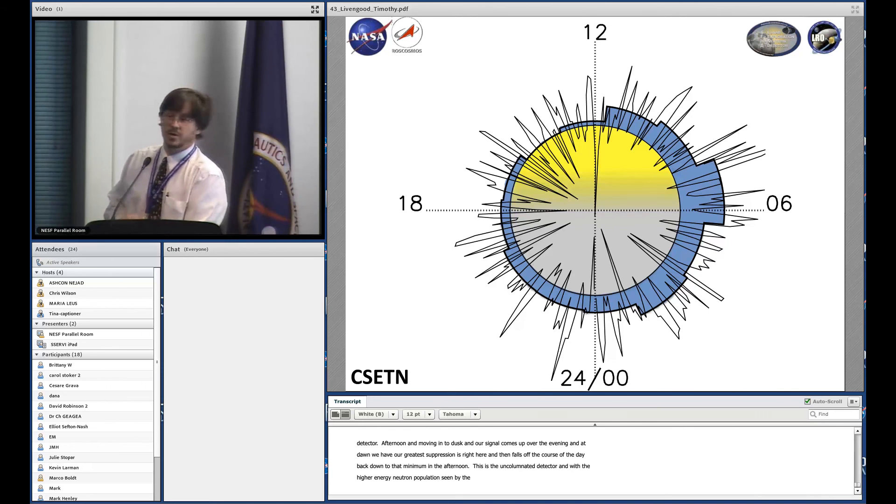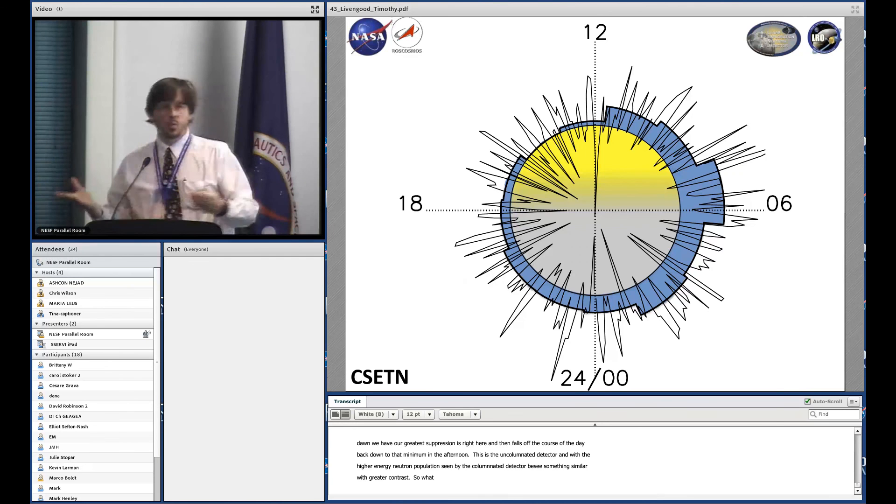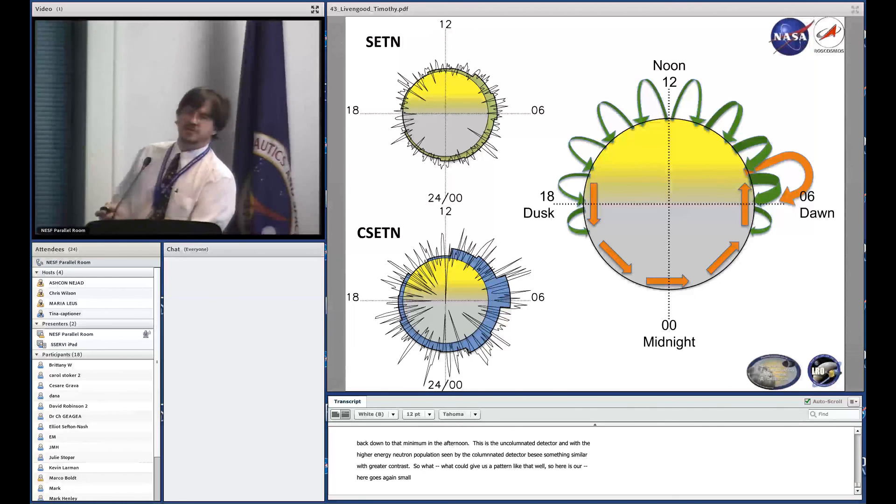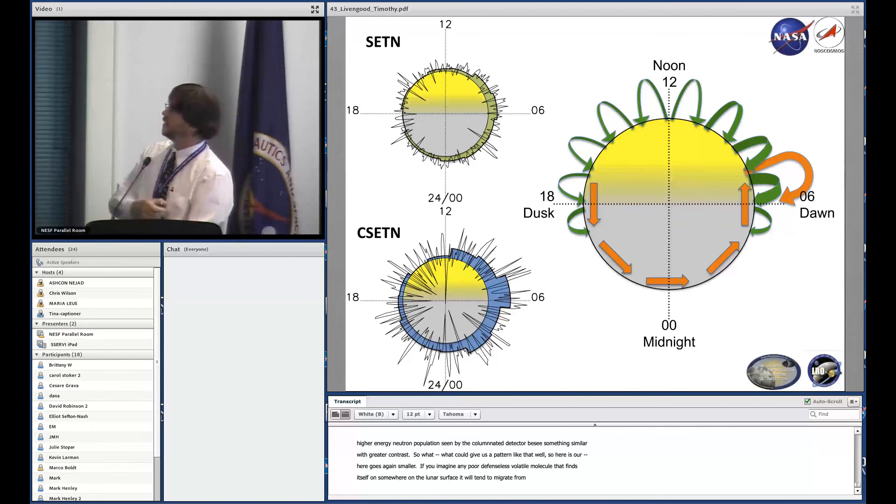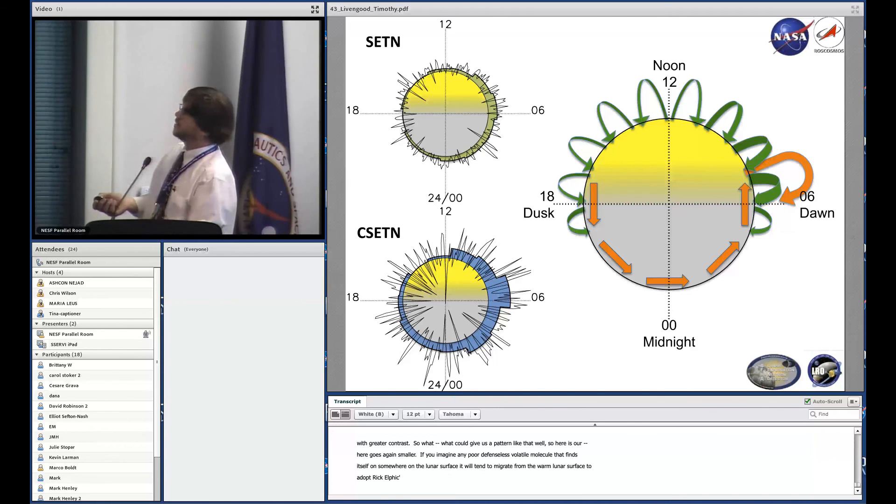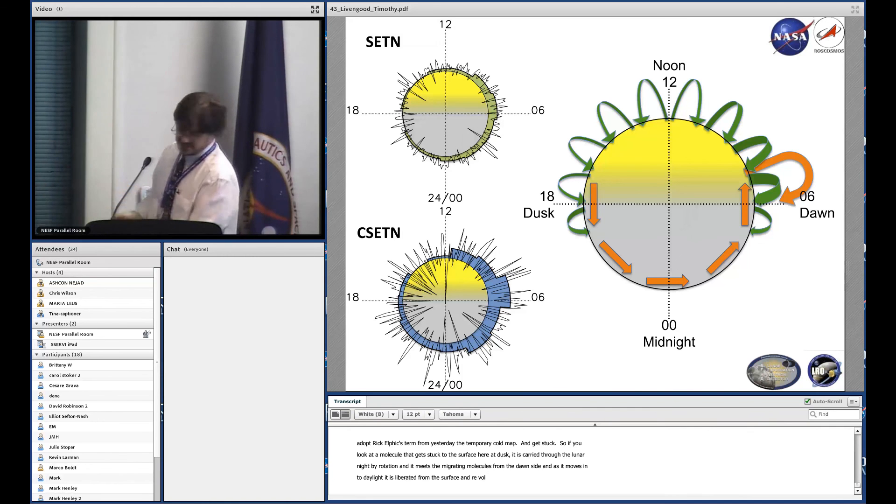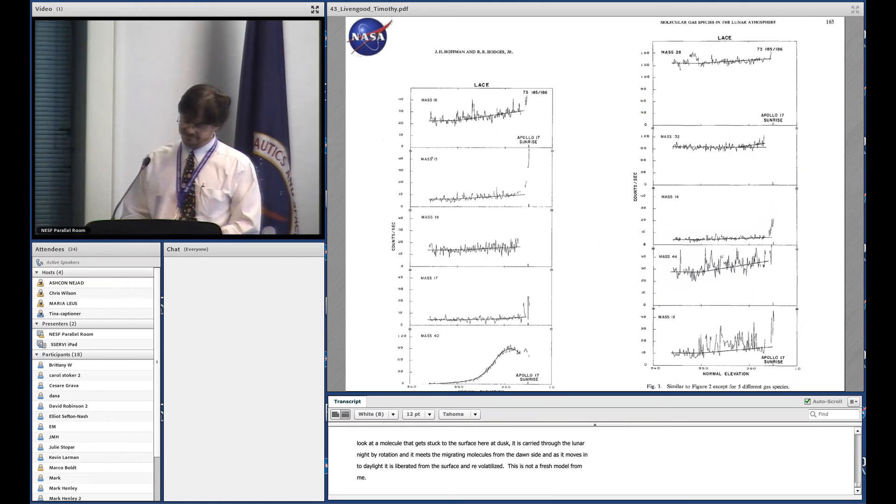What could give us a pattern like that? If you imagine any poor defenseless little volatile molecule that finds itself on the lunar surface, it will tend to migrate from the warm lunar surface towards what Rick Elphic called yesterday the temporary cold trap of the night side of the moon, where temperatures drop sharply down to about 120 to 100 Kelvin at dawn. A molecule that gets stuck to the surface at dusk is carried through the lunar night by rotation, meets the migrating molecules from the dawn side, and as it moves into daylight it's liberated from the surface and re-volatilized as the surface warms up and migrates back across. You get this cloud. This is not a fresh model with me—I felt proud when I thought of it myself, then discovered it's all through the literature already, a very depressing moment.